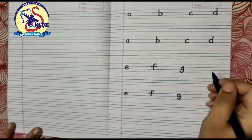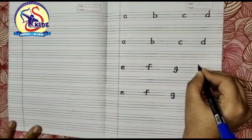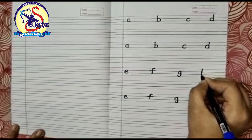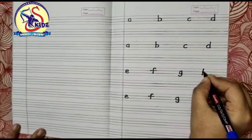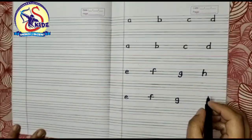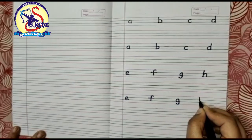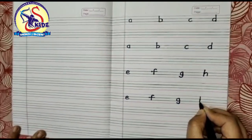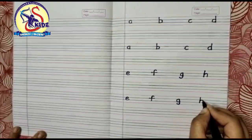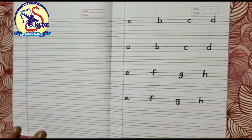Now small h. Start from the top and make a standing line. Then go to the middle and make a curve reaching to the bottom. Start from the top, make a standing line to the bottom, then go to the middle and make a curve reaching to the bottom. This is small h.